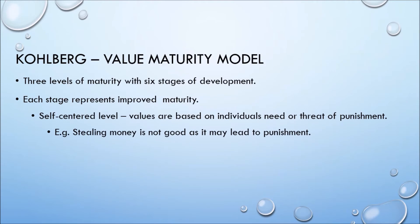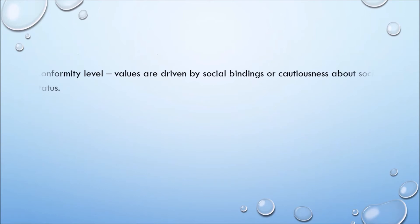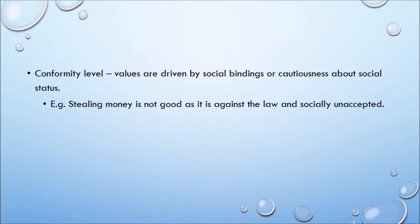The self-centered level: values are based on the individual's need or threat of punishment. For example, stealing money is not good as it may lead to punishment. The conformity level: values are driven by social bindings or cautiousness about social status. For example, stealing money is not good as it is against the law and socially unaccepted.